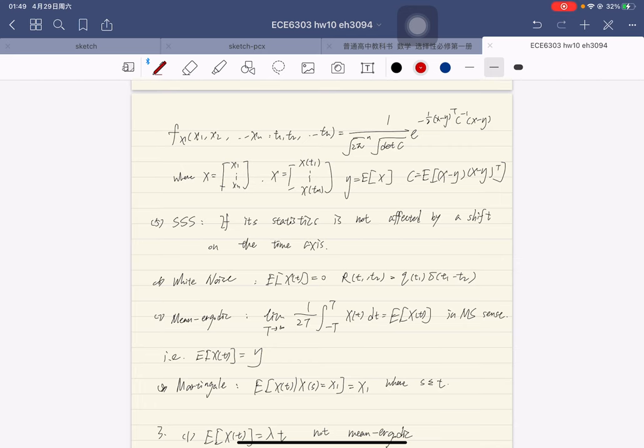Then, here is the strict sense stationary process, which is defined by: if its statistic is not affected by a shift on the time axis.